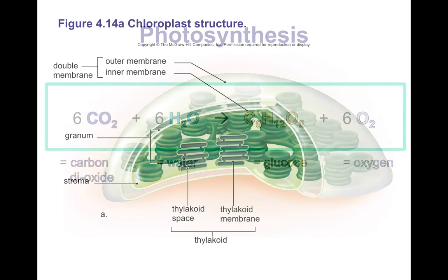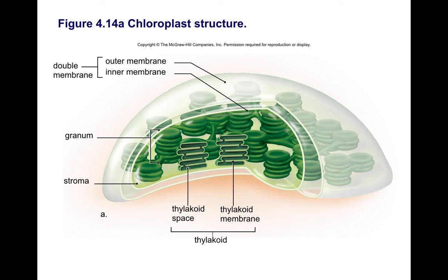Looking at chloroplast structure, you can see a double membrane outer structure that encloses the stroma. Within the stroma, we have thylakoids — these disc-like structures that can be stacked as a pile on top of each other, and each of these stacks is called a granum. Importantly, chloroplasts contain their own DNA and ribosomes — which will be quite relevant if you end up studying plant genetics. It is thanks to chloroplasts that solar energy is harvested and stored as chemical energy, which animals are then able to use.